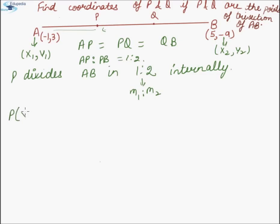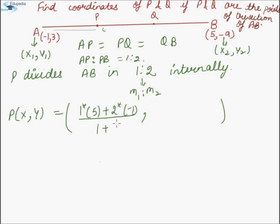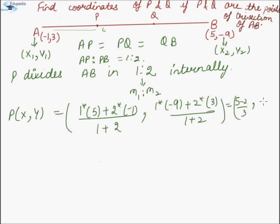Let coordinates of A be x1,y1 and of B be x2,y2, and let the ratio be M1:M2. By the section formula, if the coordinates of P are (x,y), we have x = (M1·x2 + M2·x1)/(M1+M2) = (1×5 + 2×1)/(1+2) = (5+2)/3, and y = (1×(−9) + 2×3)/3 = (−9+6)/3 = −3/3 = −1. So the coordinates of point P are (1, −1).